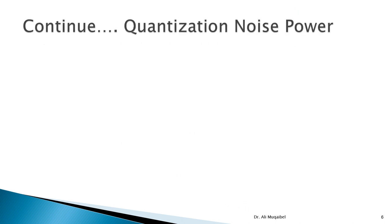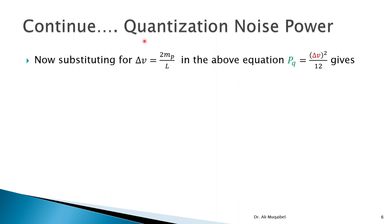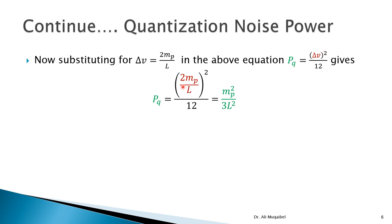To express the noise power differently, recall that delta-v equals 2NP over L. Substituting this into the noise power expression: squaring 2NP over L gives 4NP-squared over L-squared, and 4 divided by 12 simplifies to give the quantization noise power as (NP squared over L squared) times (1 over 3). This is another important form of the equation.